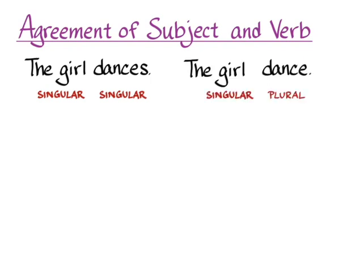If we put the original incorrect sentence back up — 'the girl dance' — the other way to make it correct is to change 'the girl' from singular to plural by adding an S. 'The girls dance' is also correct because 'the girls,' the subject, is plural and so is the verb 'dance.' I'm showing you this because as a native English speaker, you already have an instinct for how to make subject and verb agree, even if you've never learned the formal jargon.